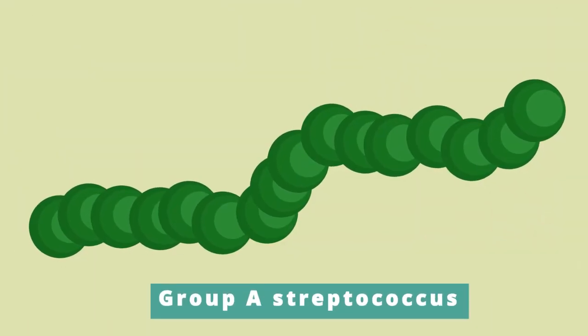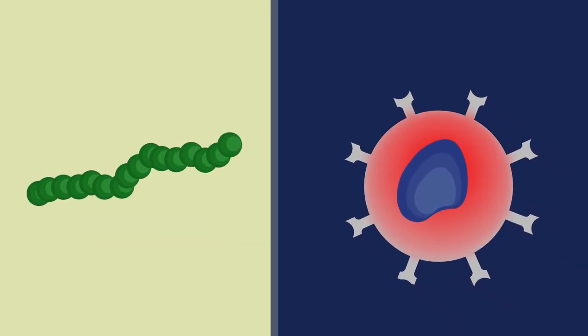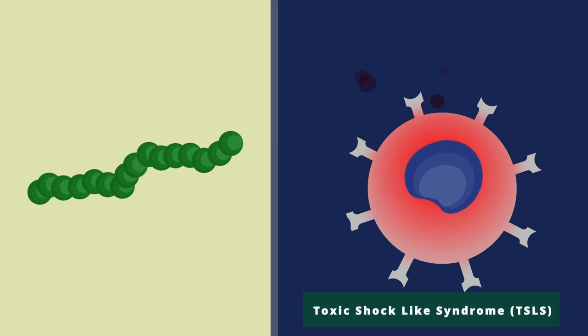Another type of bacteria called group A streptococcus also can produce superantigens and cause a similar syndrome. Some people call this identical syndrome toxic shock-like syndrome or TSLS.